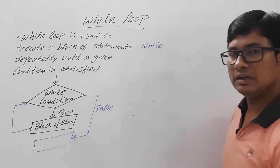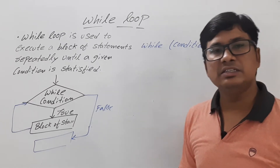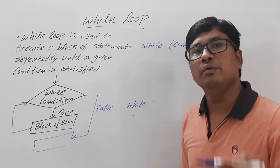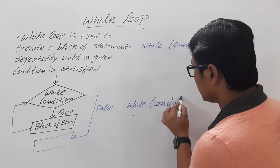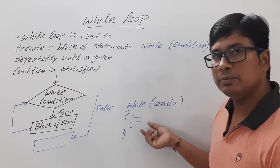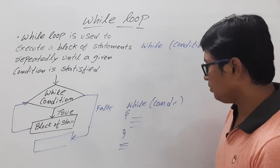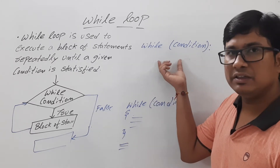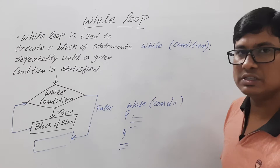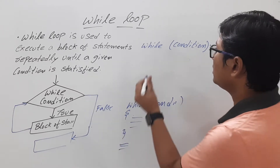Now let me discuss the syntax of a while loop in Python. For using the while loop we use the keyword 'while', then you have a condition or test expression, followed by a colon. In C programming we use curly braces to define the set of statements, but in Python we do not use curly braces. Instead, Python supports indentation — once you type the colon and press Enter, indentation will start.